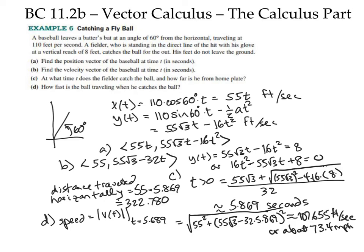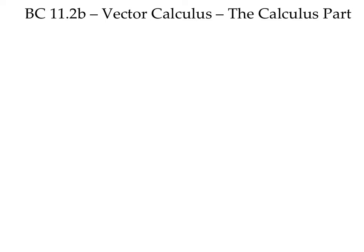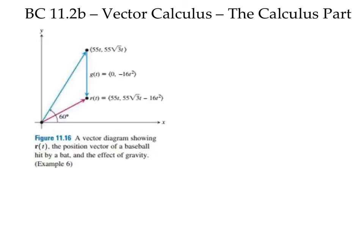Here's a nice little way to think about the effect of gravity on the vertical velocity over time by looking at it as a vector. So we can think of the non-gravity piece of the velocity as being the vector 55t, 55 root 3t, and the vertical piece, the gravity piece of the vector as being g of t, 0, negative 16t squared. And if we add those together, we get the same expression that we had for the velocity in vector format. So that's kind of an interesting way to look at it.